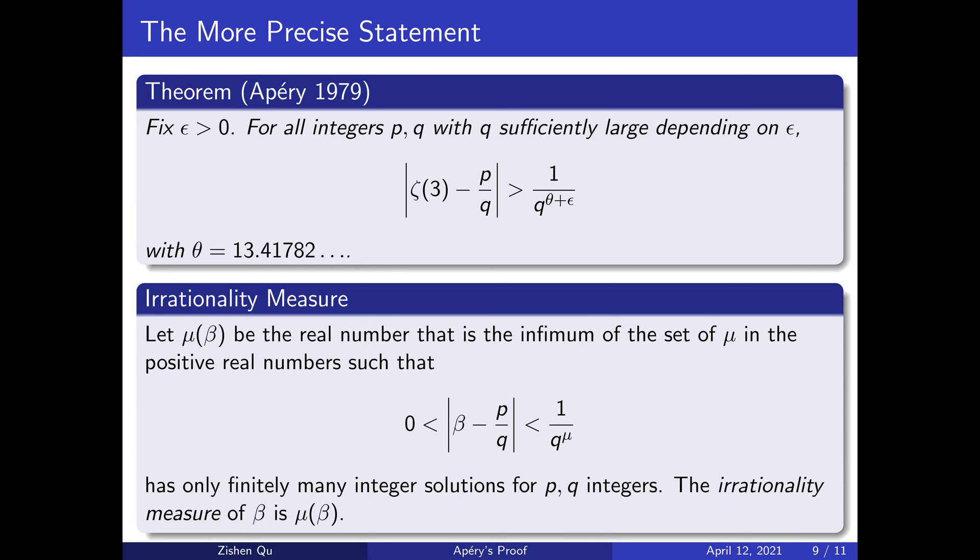Suppose that μ is a positive real number such that the distance between β and p/q is less than 1/q^μ for only finitely many integers p and q. The irrationality measure of β is the infimum of the set of μ which satisfies this condition.